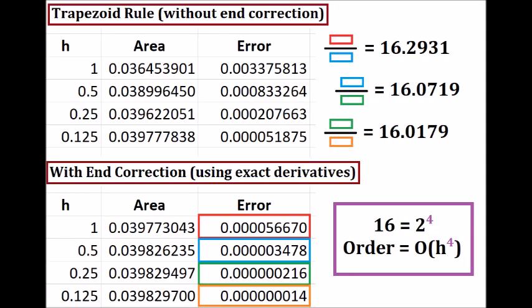For reference, I have included data for the uncorrected trapezoid rule up top. We found these numbers in the first lesson on this topic. The table at bottom is the same data we just saw on the last screen. Notice the color-coded divisions. This is showing that reducing the mesh size by a factor of 2 tends to reduce the error by a factor of 16. Since 16 equals 2 to the fourth power, we can infer that this method is of fourth order, h to the fourth. That is in fact what our derivation showed us it should be.